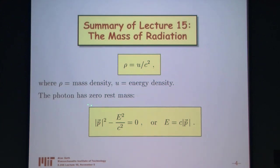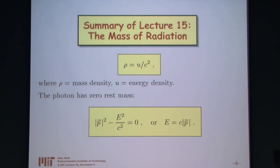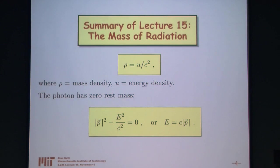The photon, described as a particle, has zero rest mass, meaning it can never be at rest — it always moves at the speed of light. Its energy can be arbitrarily small since energy is proportional to momentum. For a given frequency, the energy is h times nu. The famous relation p squared minus E squared over c squared equals minus m₀ squared c squared has zero on the right-hand side for photons, since m₀ equals zero, so for photons E equals the speed of light times the momentum.